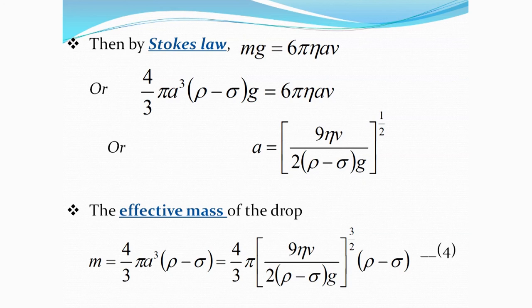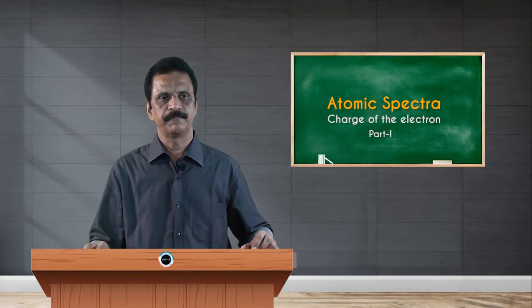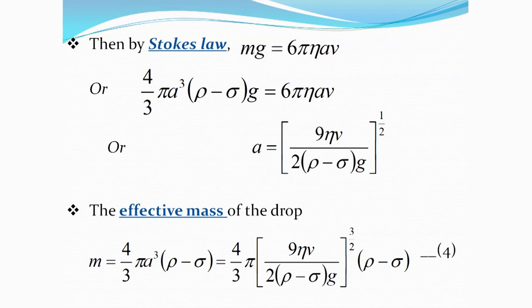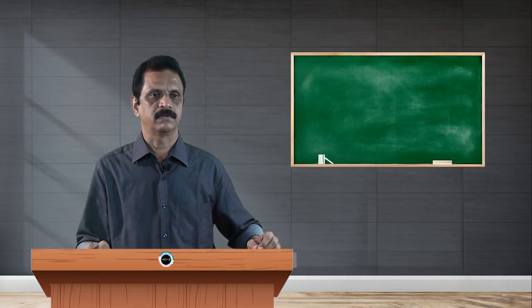So we simplify and obtain this expression. The very purpose of deriving this expression is that we cannot directly measure the mass of the oil drop falling inside the device. By making use of the principle of buoyancy and the particle moving in a viscous medium, we measure the effective mass of a single drop falling under gravity. This expression gives the effective mass in terms of the coefficient of viscosity of air, the terminal velocity (which can be measured), the density of the oil, the density of air, and the acceleration due to gravity. So in terms of measurable quantities, we determine the effective mass of the oil drop.